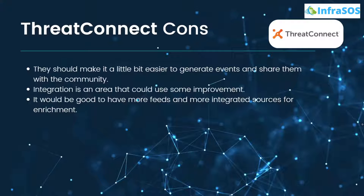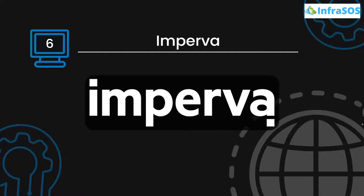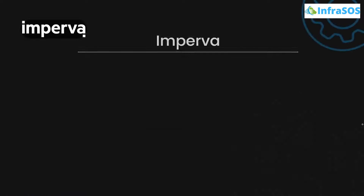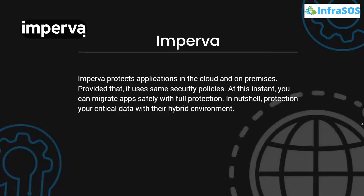Number six on our list is Imperva, a powerful cybersecurity company focused on protecting cloud networks. Imperva protects applications in the cloud and on-premise using the same security policies, so you can migrate apps safely with full protection. Protection of your critical data in their hybrid environment is a key strength.